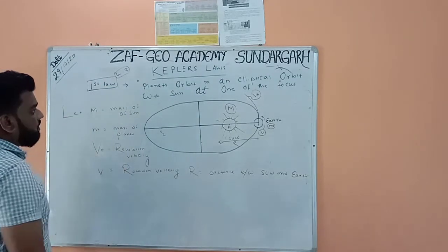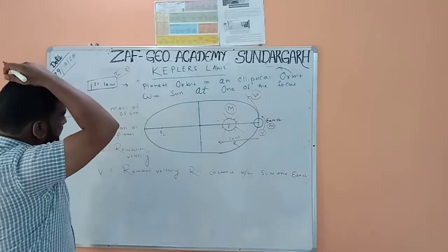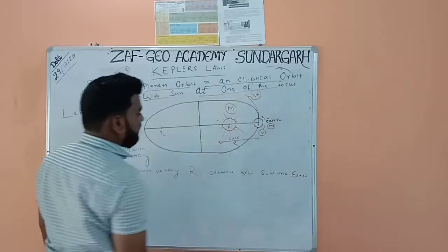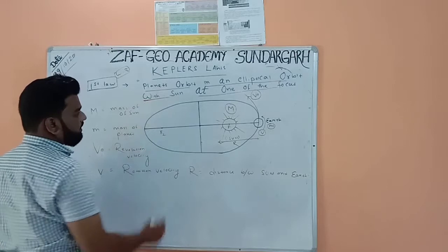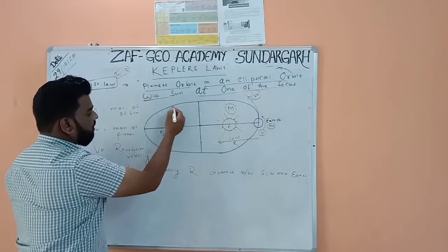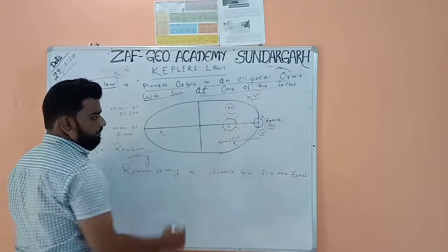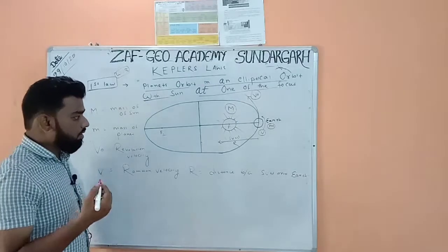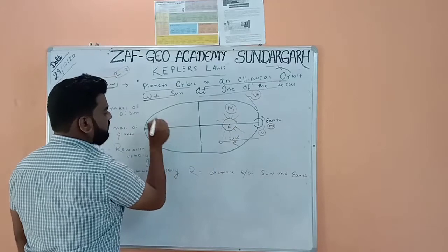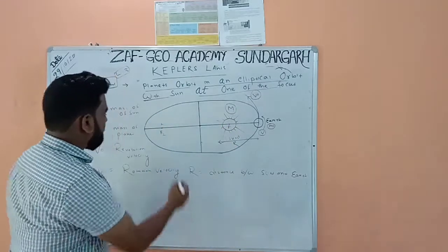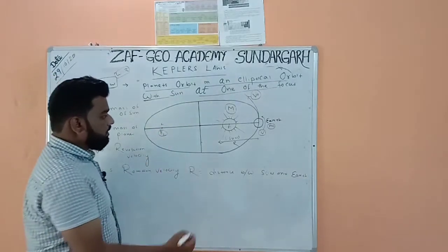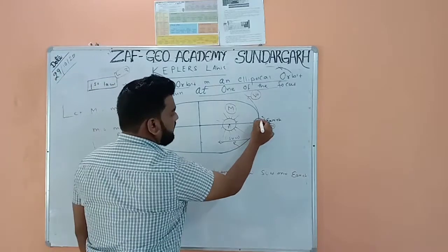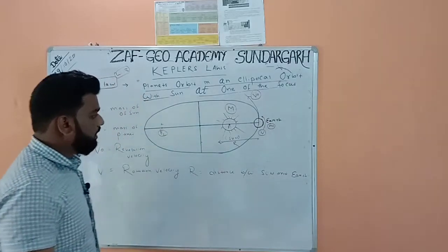Let's discuss the first law of planetary motion. According to the first law, planets orbit in an elliptical orbit with the Sun at one of the foci. Let's illustrate this in a diagram. Suppose this is the Earth's orbit, revolving in this path. An orbit must have two foci — this is f1 and this is f2. The Sun is situated at one of the foci.